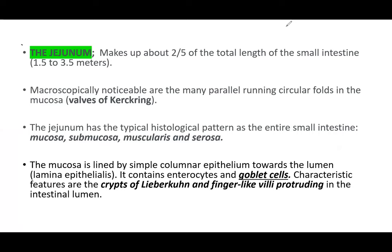The jejunum makes up about two-fifths of the total length of the small intestine — about 1.5 to 3.5 meters. Microscopically, notable are many parallel-running circular folds in the mucosa, also called the valves of Kerckring, valvulae conniventes, or plicae circulares. The jejunum has a typical histological pattern: mucosa, submucosa, muscularis, and serosa.